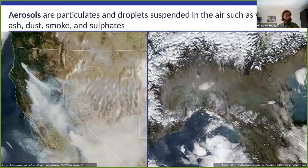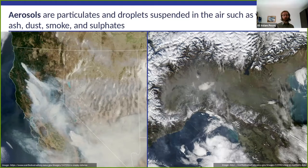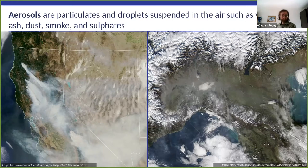Not everyone will necessarily know what aerosols are. Well, they're particulates and droplets suspended in the air — basically anything in the air that isn't air. Common examples are things like volcanic ash or dust. You probably saw in the news those orange mountains of snow earlier in the week — that was dust being blown over the Alps. There's also smoke coming from fires in California, or industrial areas such as the Po Valley in northern Italy, where there's a somewhat persistent smog from the heavy industry in the area.